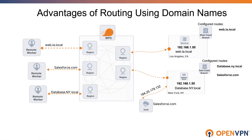Looking at the advantages of using domain routing: as shown in this slide, both the west coast branch and east coast branch have the same IP subnet, and as a result both the web server and database server have the same IP address. So how can we access a database server and a web server? The domain routing feature in OpenVPN Cloud enables you to solve this by creating unique domain names that are used as routes to different networks instead of the IP address subnet.